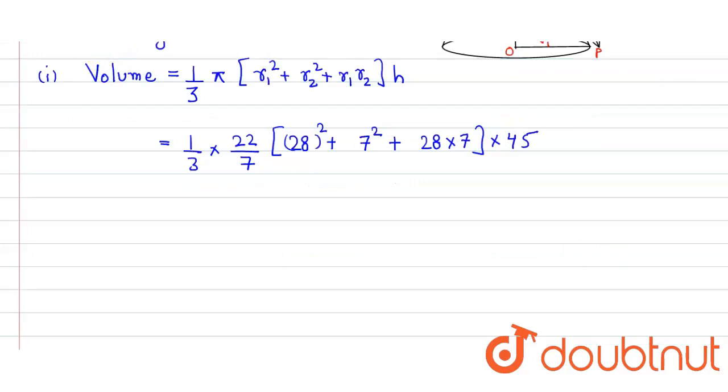So here this 3 cancels this 45 and here we get 15. So here it is equal to 22 × 15 divided by...